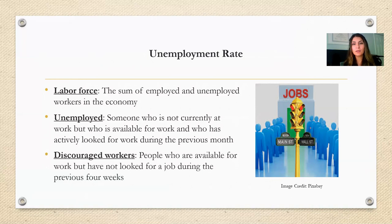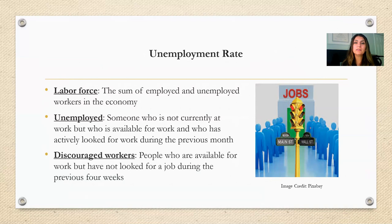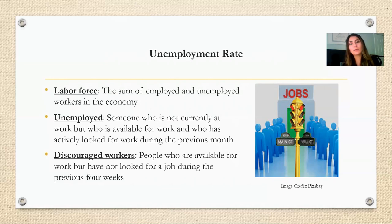Individuals who didn't work during the past four weeks but report that they actively looked for a job are considered unemployed. To be unemployed, you must have been actively looking for a job. If not, you will be considered not in the labor force and categorized as a discouraged worker. To calculate the unemployment rate, the number of unemployed people is divided by the number of people in the labor force, which consists of all employed and unemployed people. Economists treat the discouraged worker category with caution, especially during the pandemic, because this could result in an artificially lower unemployment rate.